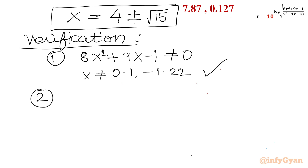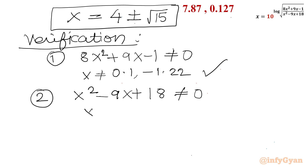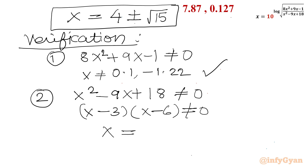Condition 2: the denominator x² − 9x + 18 should not equal zero, meaning (x − 3)(x − 6) ≠ 0, so x ≠ 3 and x ≠ 6. This was established earlier, and neither value 4 ± √15 equals 3 or 6, so this condition is also satisfied.